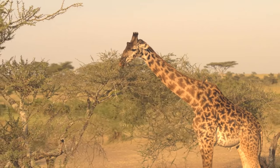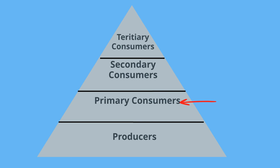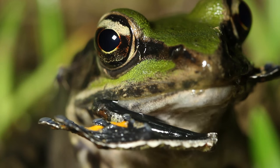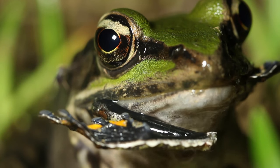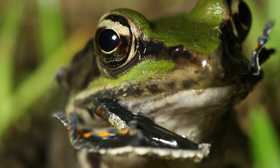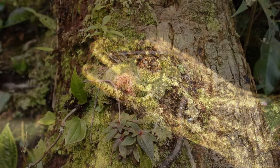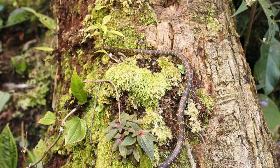The next level includes secondary consumers, which include carnivores or omnivores. Carnivores consume primary consumers, and omnivores eat producers and primary consumers. Examples include frogs, lizards, many snakes, and many birds.